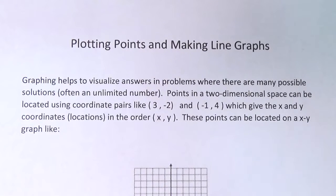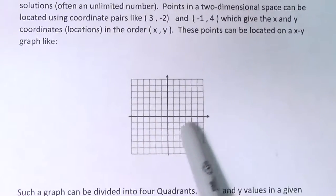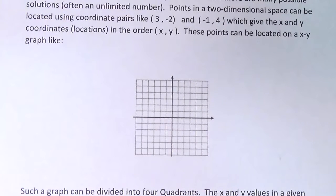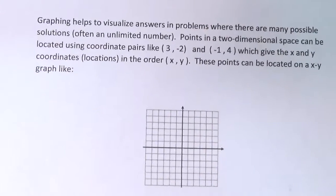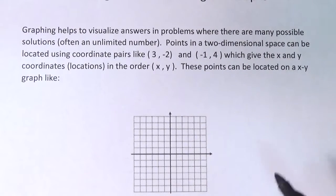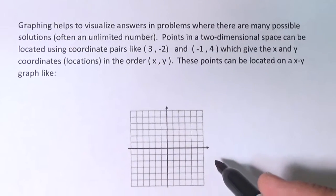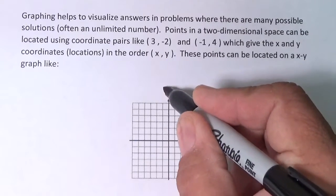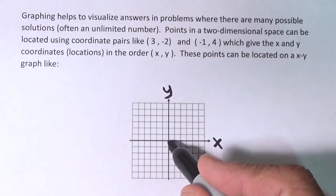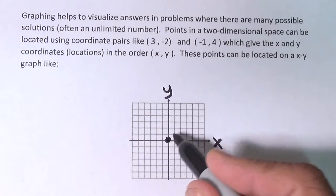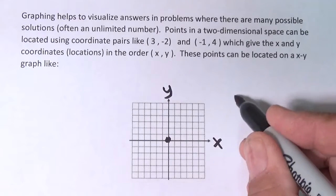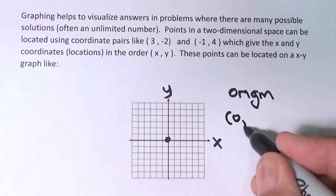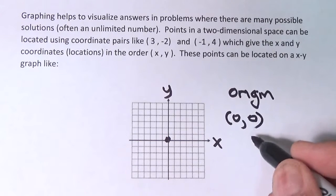Points in two-dimensional space, anything on a flat surface like this, can be plotted on a grid like the one we see right here, and we use coordinates to do that. For instance, looking at this grid, the horizontal axis is the X and the vertical axis is the Y. The spot where the two axes come together in the center is known as the origin and it has the X and Y values 0 and 0. These are the coordinates.